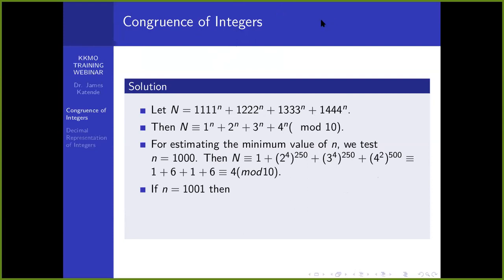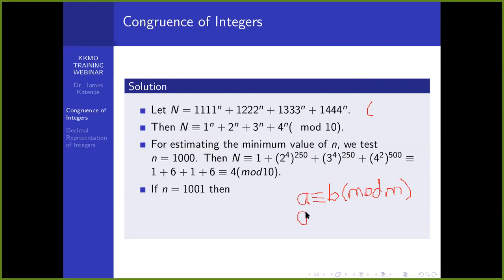A key property we need: if A is congruent to B mod M, then A raised to n is congruent to B raised to n mod M. You can raise both sides of a congruence to the same power and the congruence is still preserved. This technique can be used recursively to solve the problem.